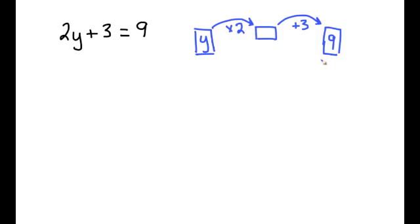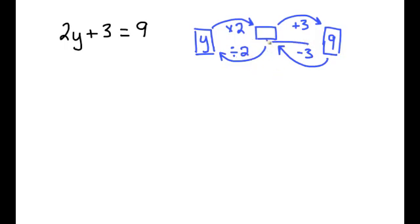If we follow the same sort of logic as in the GSP lesson, we would work backwards. So the first thing we do to that nine is we would minus three, and then we would do the inverse of multiplying by two, which is dividing by two. We have two things we need to do to get our variable by itself: subtract by three and divide by two.